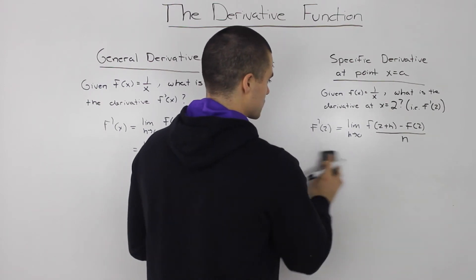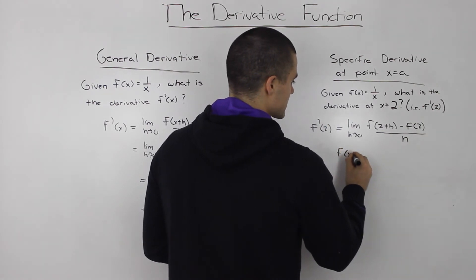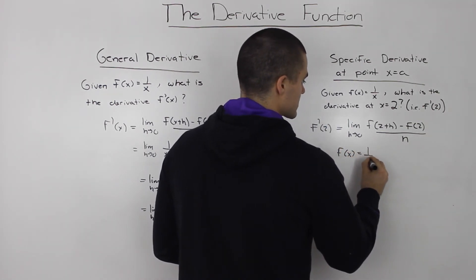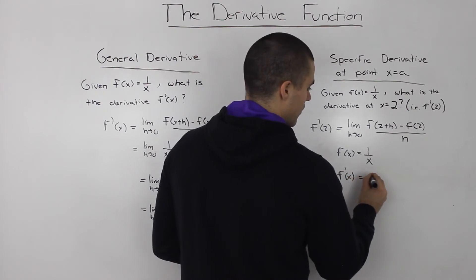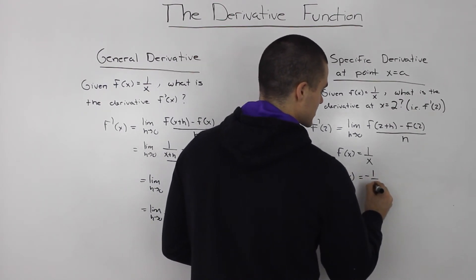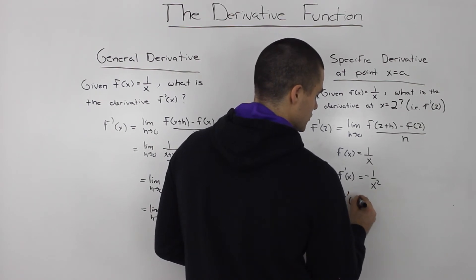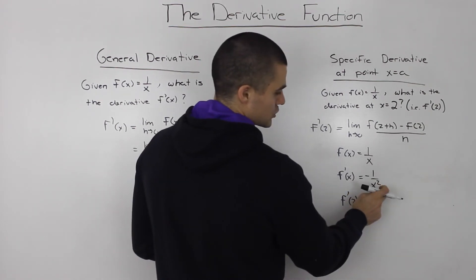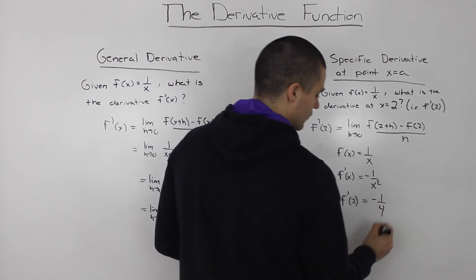So first let's rewrite everything we have. We got f of x equals 1 over x. Then we found the derivative f prime of x, and that was negative 1 over x squared. So that means the derivative at 2, if we plug in 2 for x, we'll get 4 in the denominator, which is negative 1 over 4.